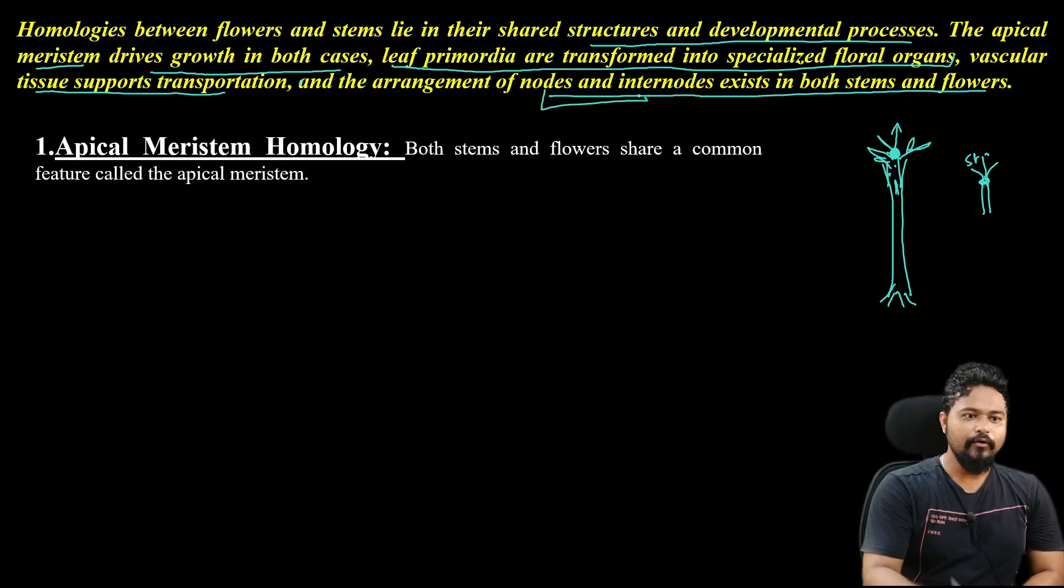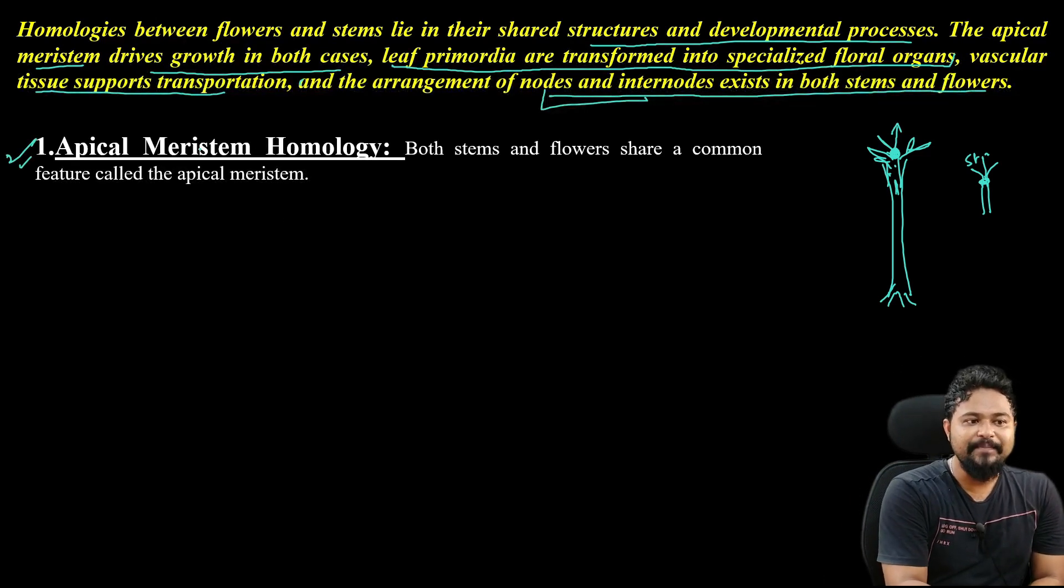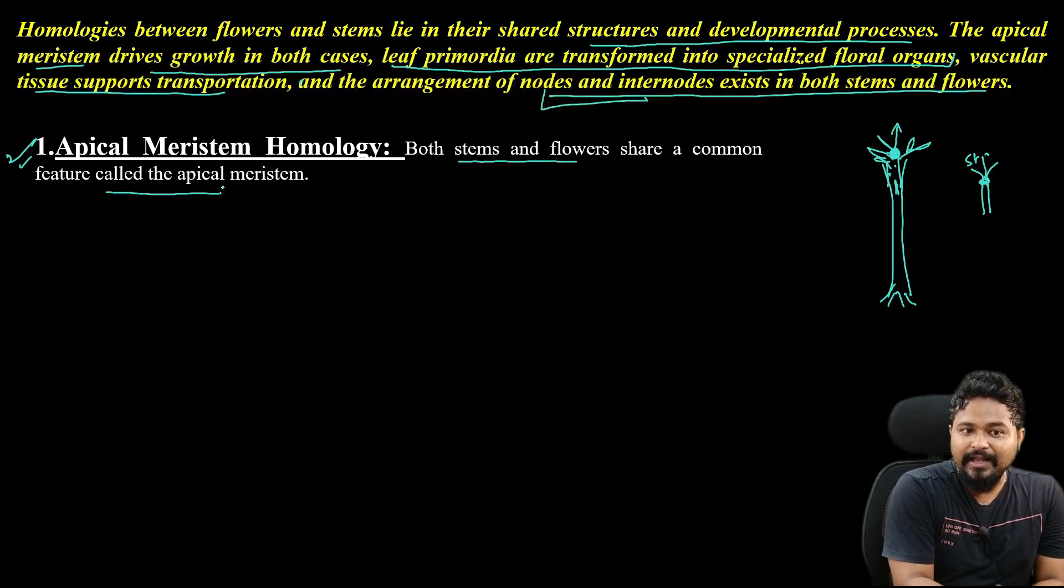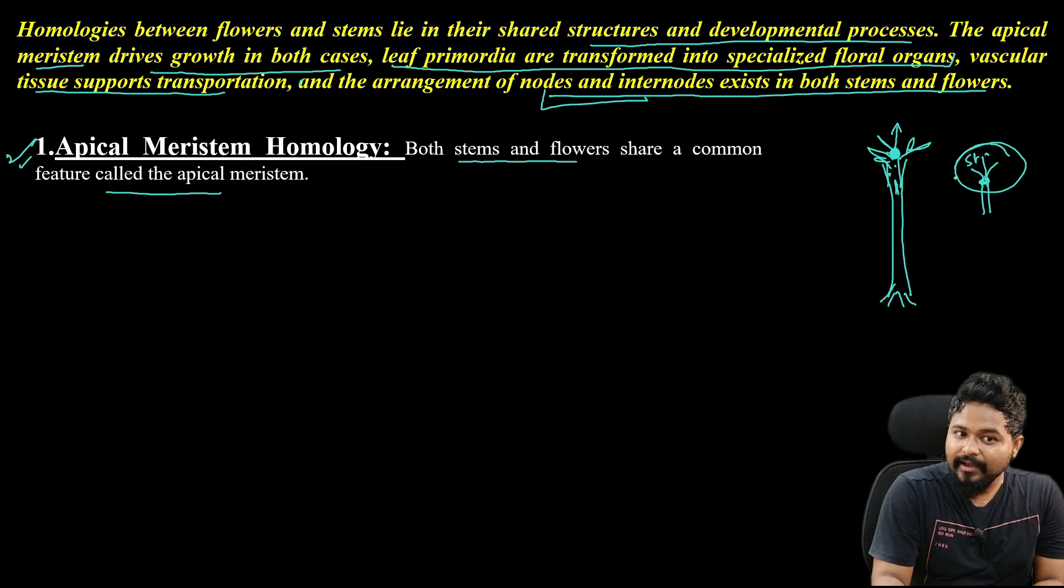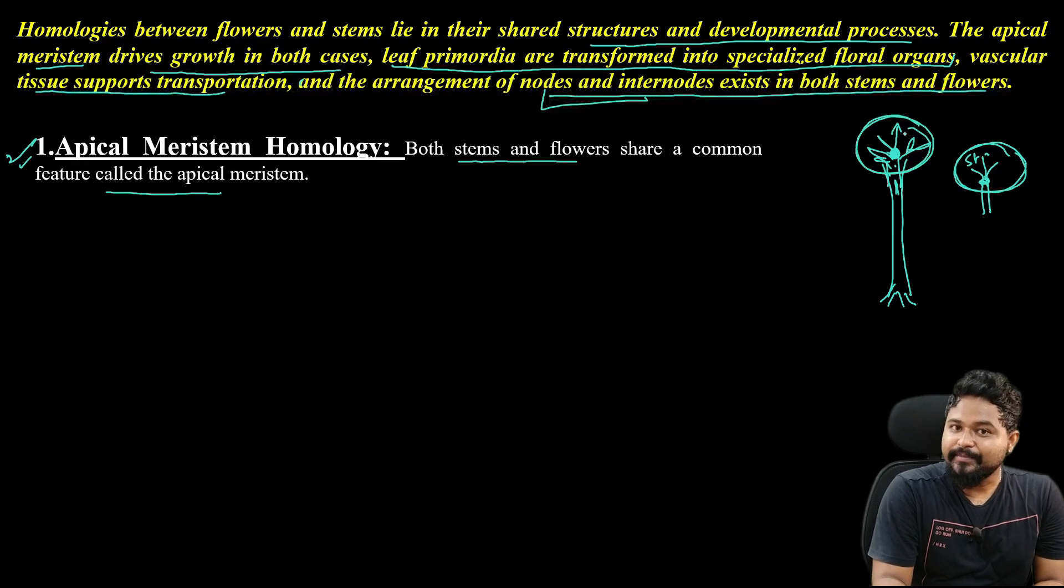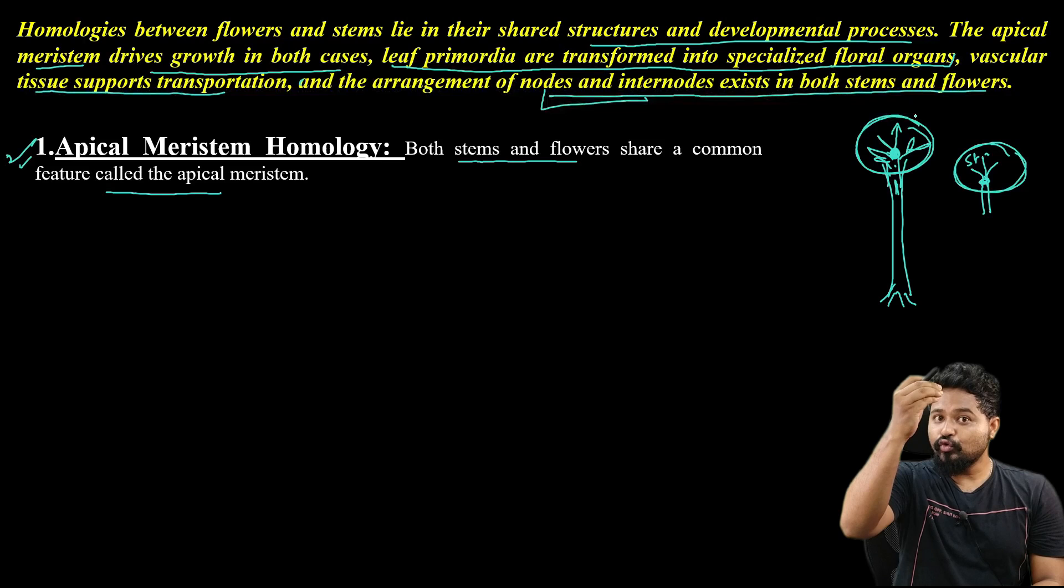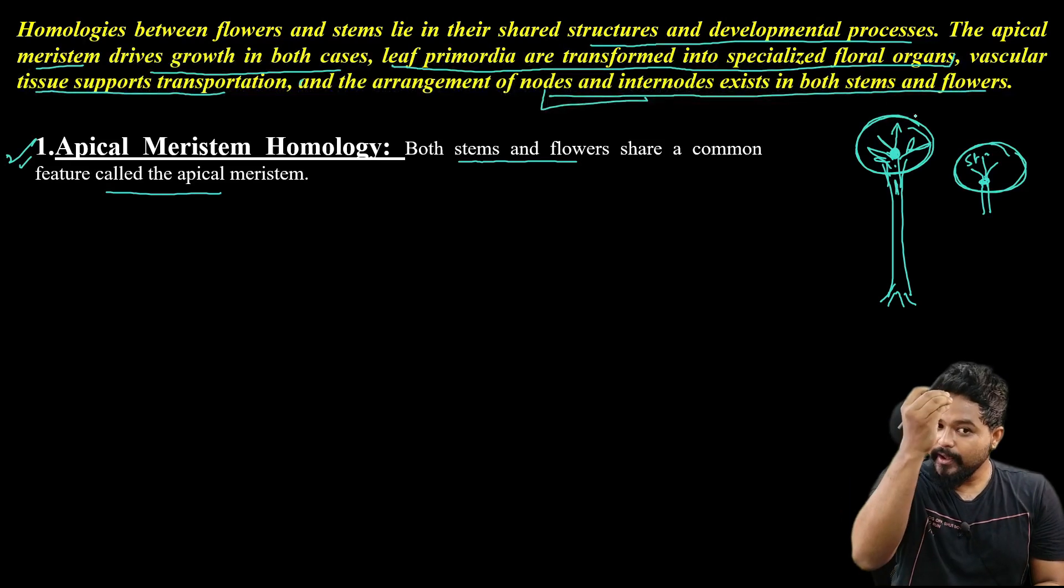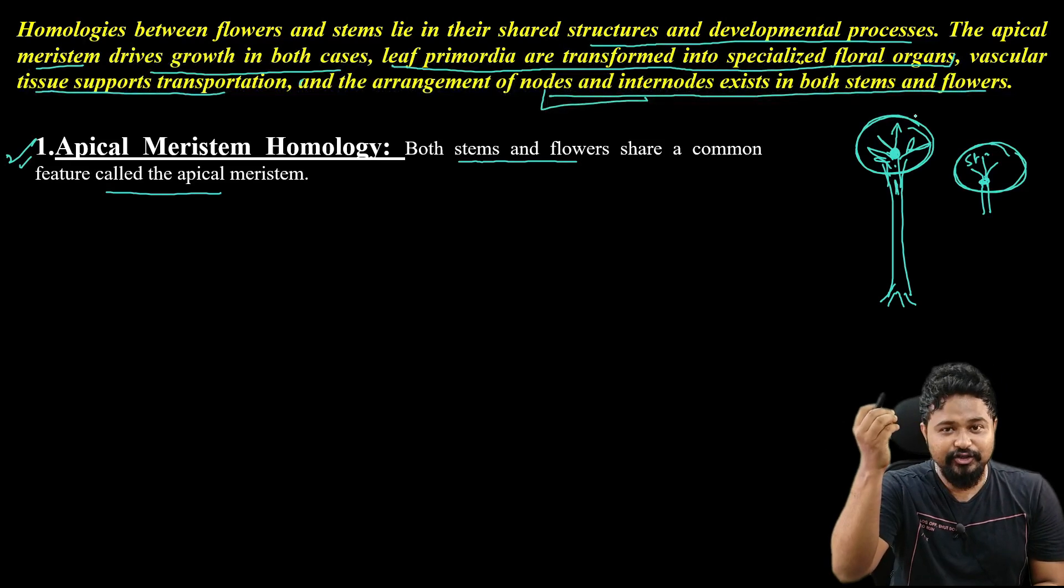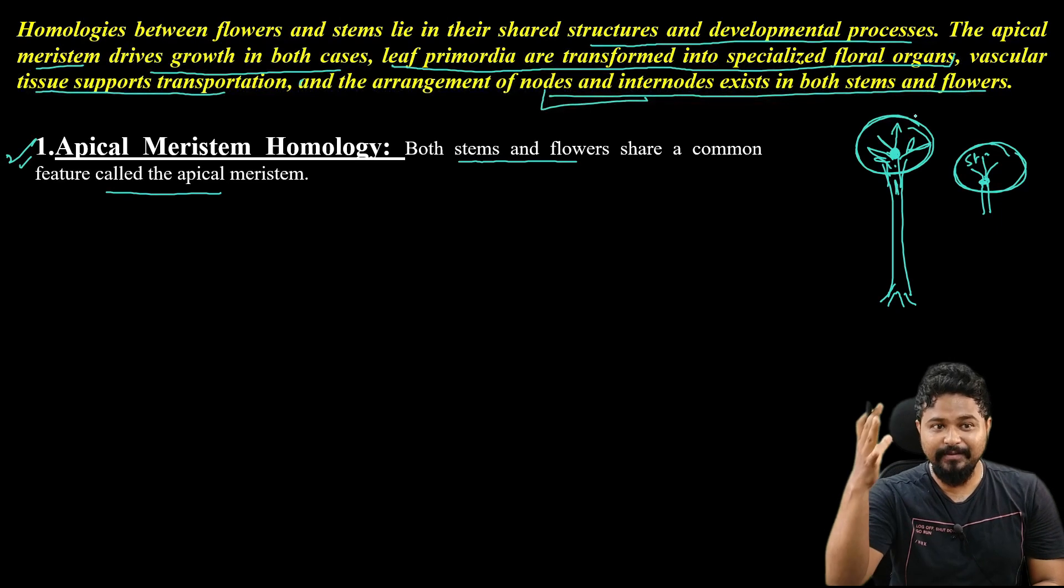First point: apical meristem homology. Both stems and flowers share a common feature called the apical meristem. From the apical meristem, new leaves form in stems, and in flowers, new floral structures develop.